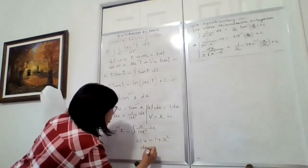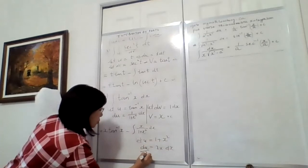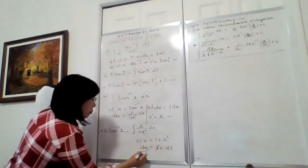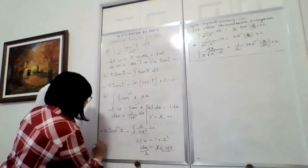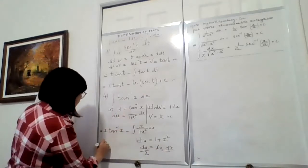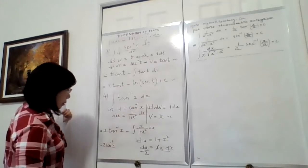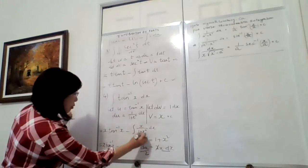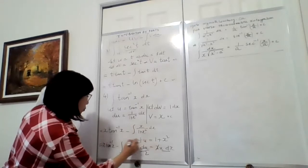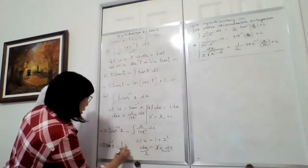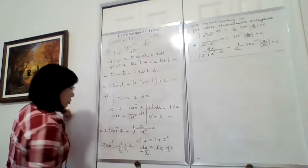So therefore du becomes 2x dx. Dividing by 2, we get (1/2)du equals x dx. So now when we substitute back, the integral of x/(1+x²)dx becomes ∫(1/2)·(1/u)du. Using the substitution rule from last week, the integral of 1/u is ln|u|, so we get (1/2)ln|u|.